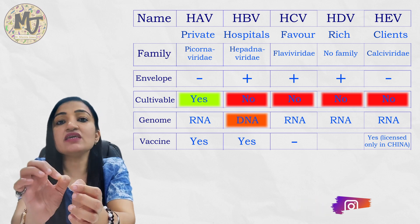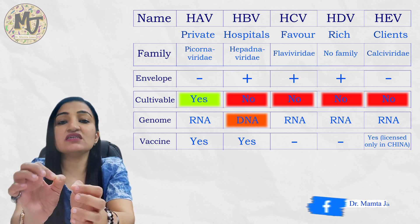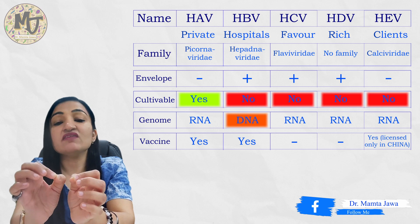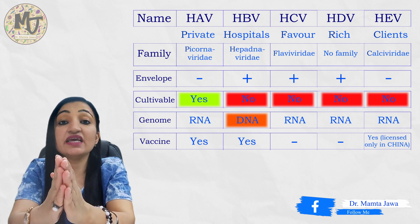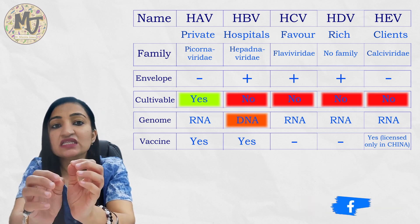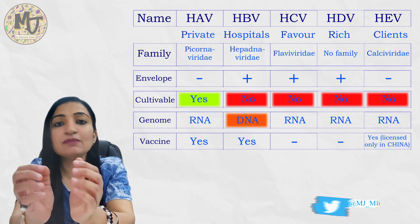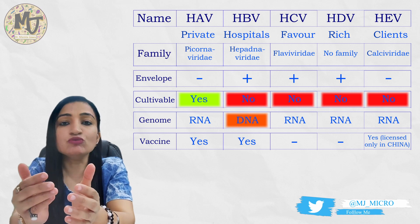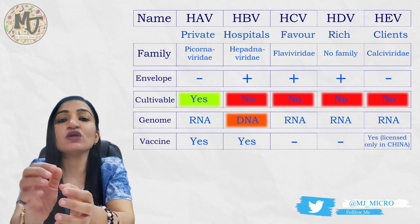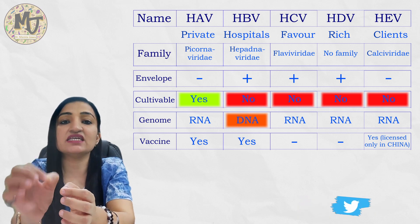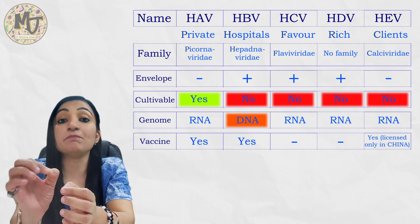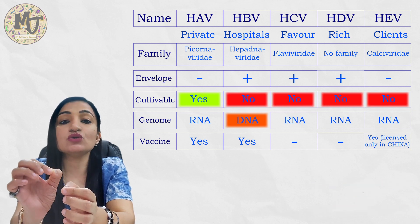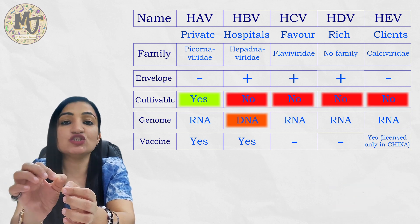As far as HDV is concerned, there is no dedicated vaccine against this virus either. However, if someone has taken the vaccine against HBV, that person is automatically protected against symptomatic HDV infection as well, because HDV is a dependent virus that relies on HBV for its replication.